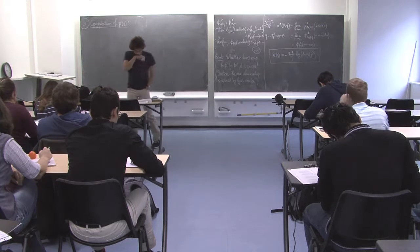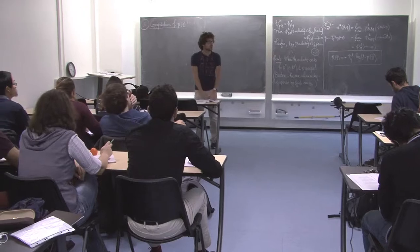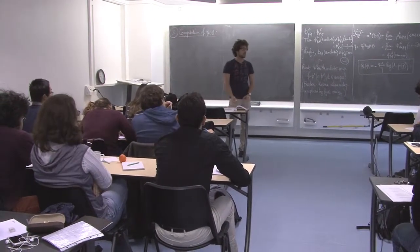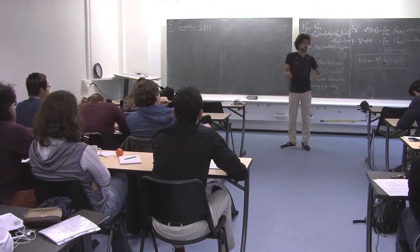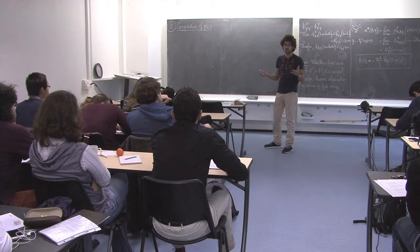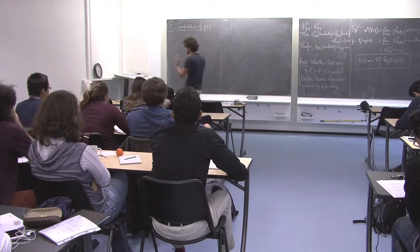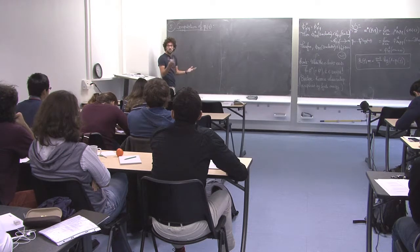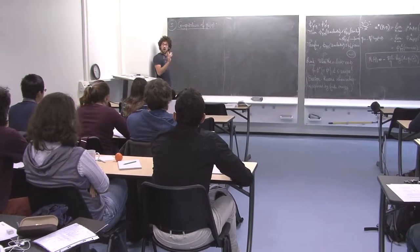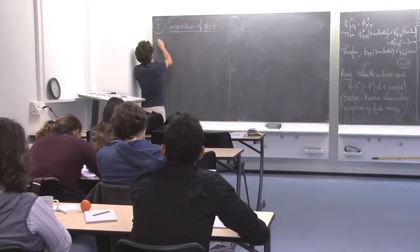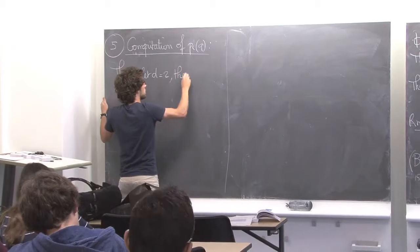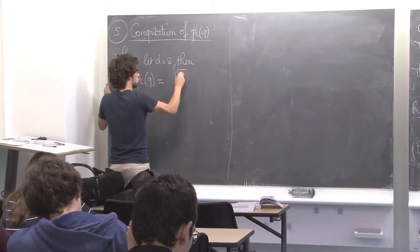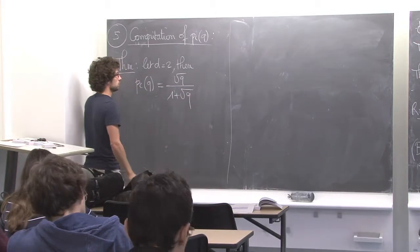The theorem is the following. In general, exactly like for percolation: except in dimension two, where we know p_c is one half, in higher dimensions we are not really expecting a special value for p_c. For d ≥ 3, no reason to have any closed formula for p_c. But in dimension two, you have a theorem: for d = 2, p_c(q) equals sqrt(q)/(1 + sqrt(q)).